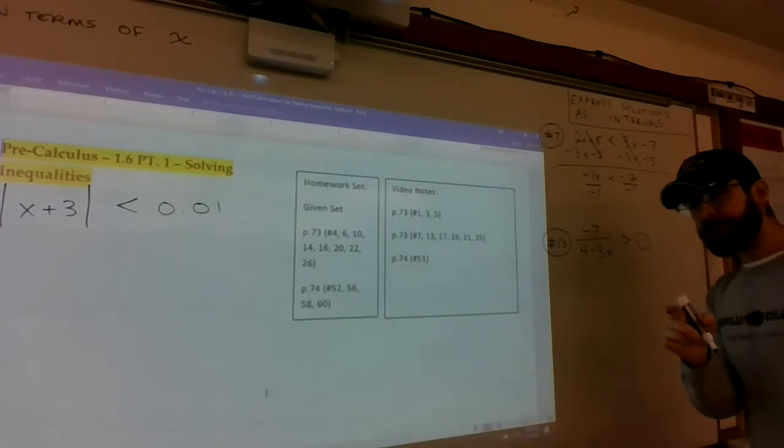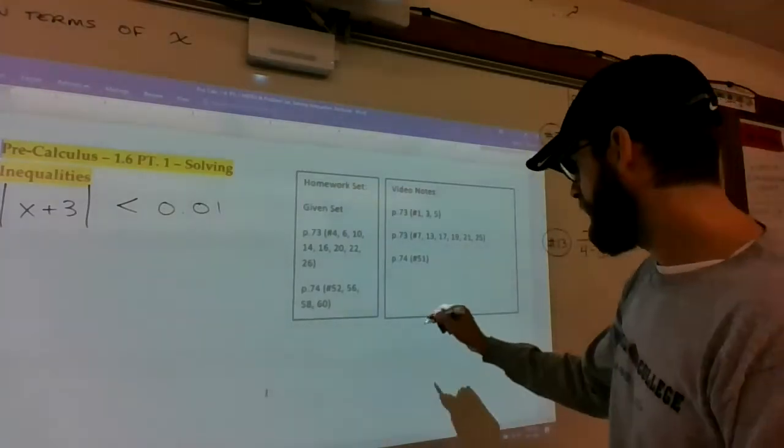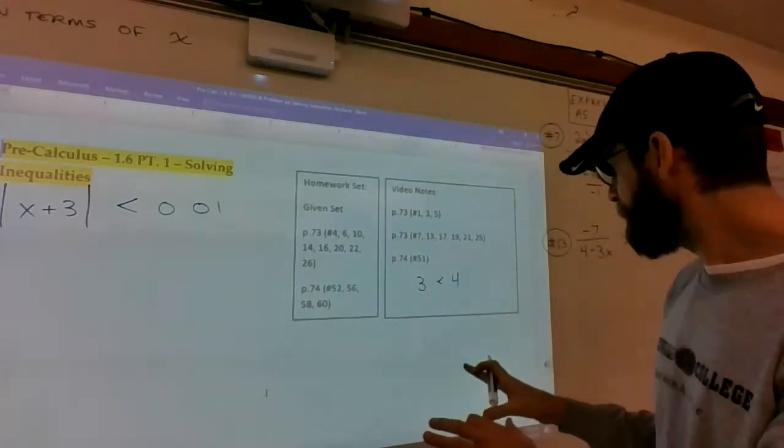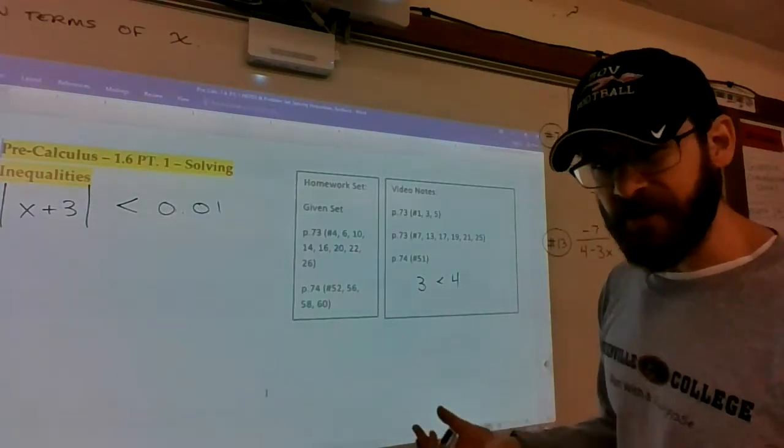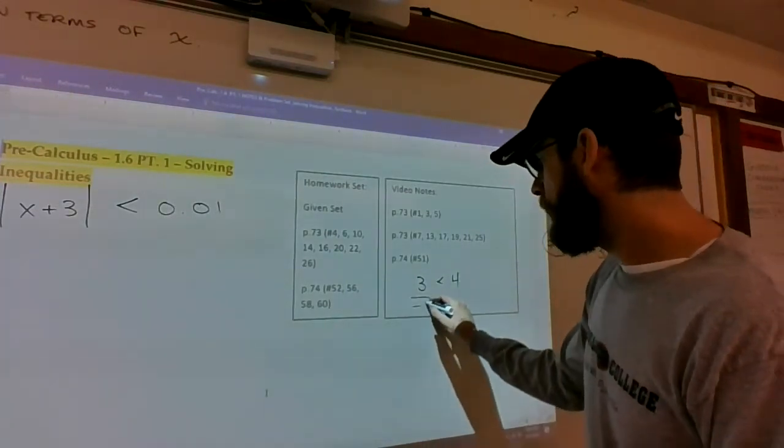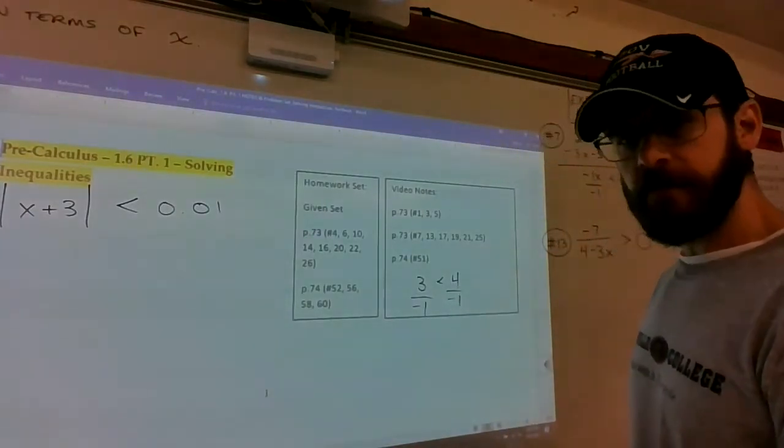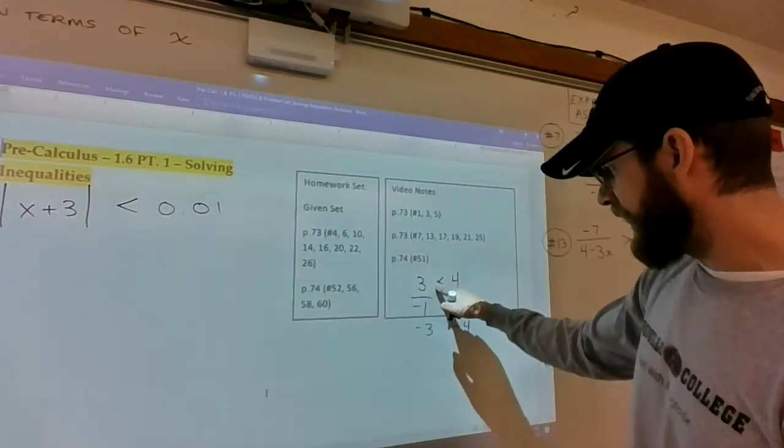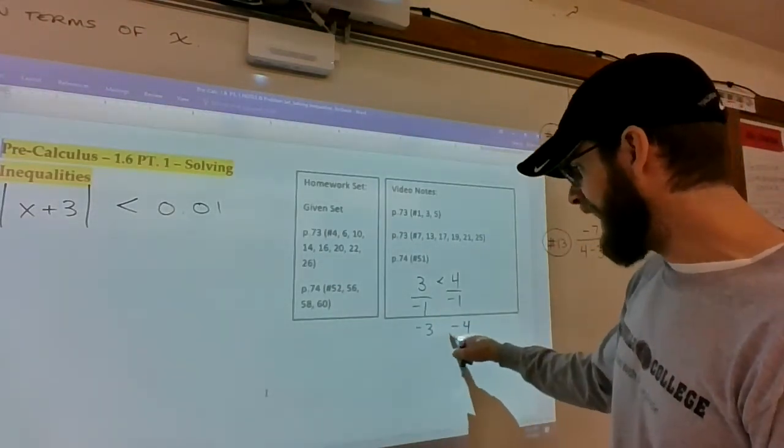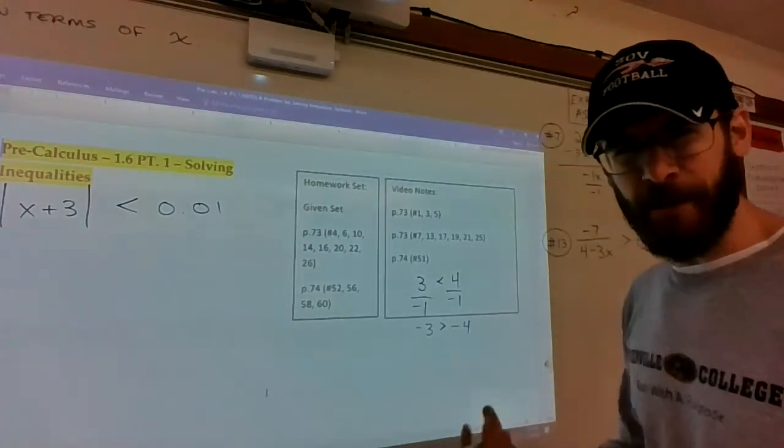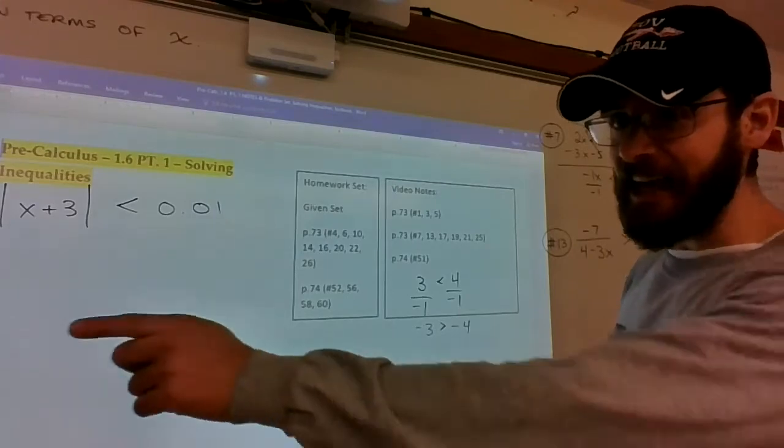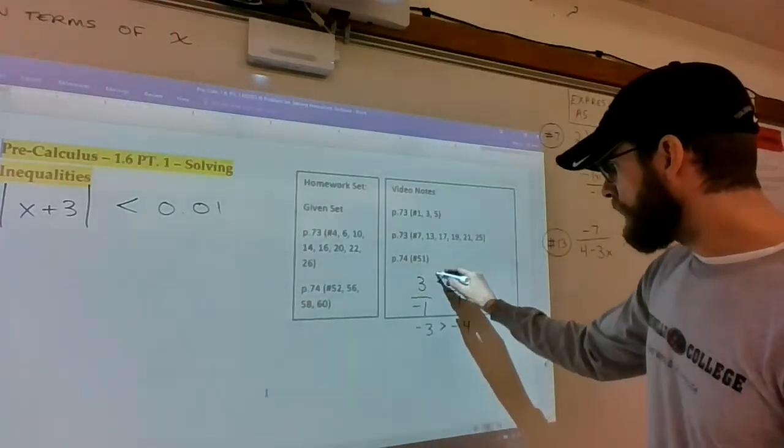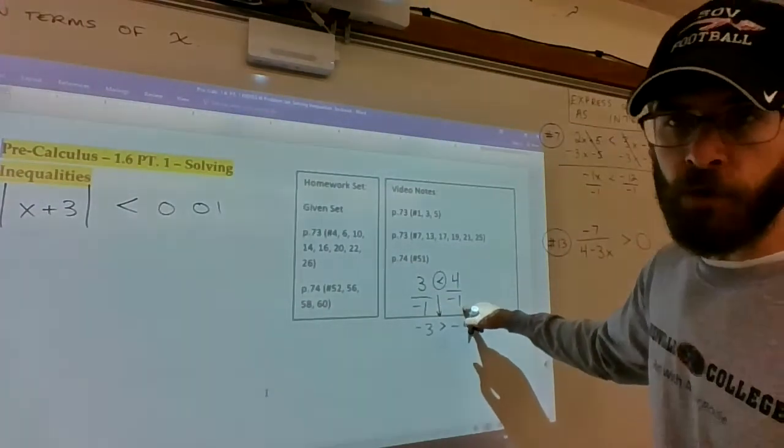Keep in mind that inequalities have a wonky thing. 3 is less than 4, here's a random example. What if I divided both sides by a negative number? Let's divide both sides by negative 1. Negative 3 is now no longer less than negative 4, but greater than. When you look at a number line, negative 4 is left of negative 3, which means negative 3 being right to it is bigger. You just got to switch it when you divide by negatives or multiply by negatives.